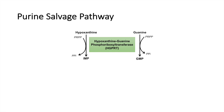HGPRT is also an important enzyme in certain genetic disorders, which I'll mention in another video. Once you have IMP and GMP from the salvage pathway, IMP can be converted into GMP or AMP. AMP and GMP can be brought back into that pathway and processed into ATP and GTP, and then utilized for DNA synthesis or as energy-carrying molecules.